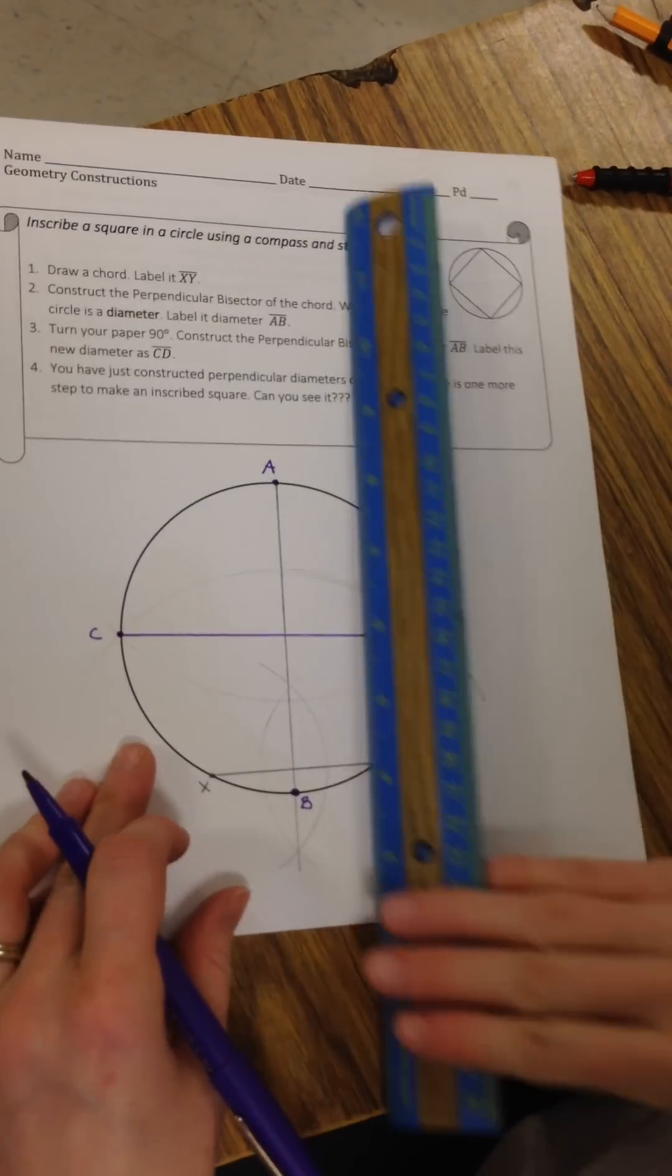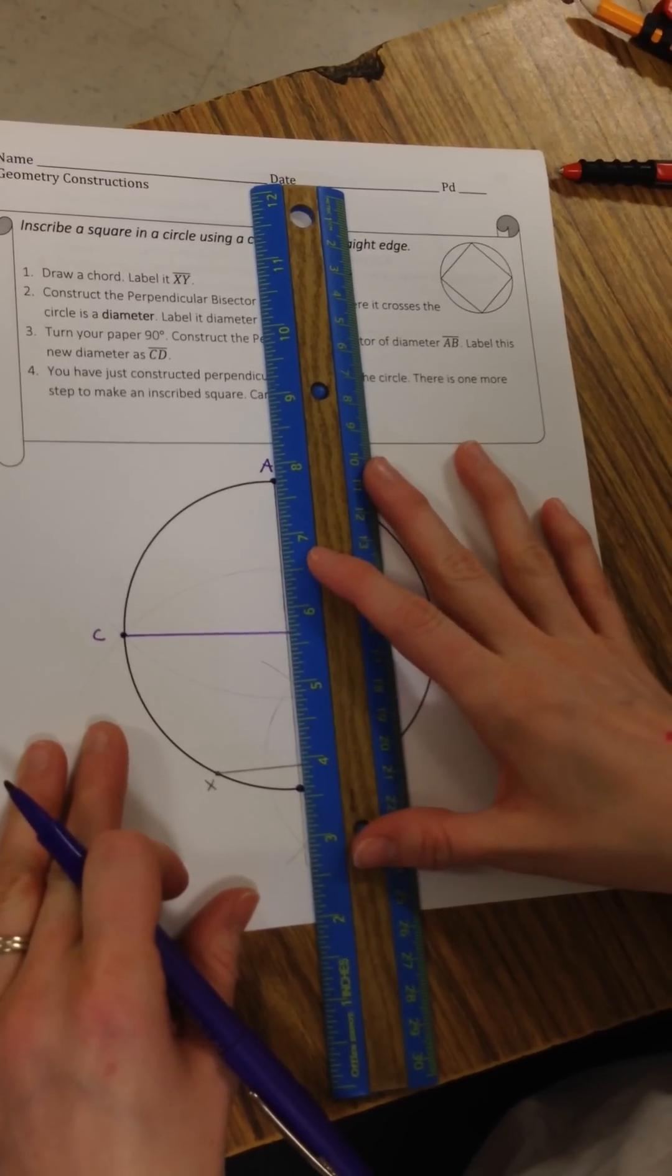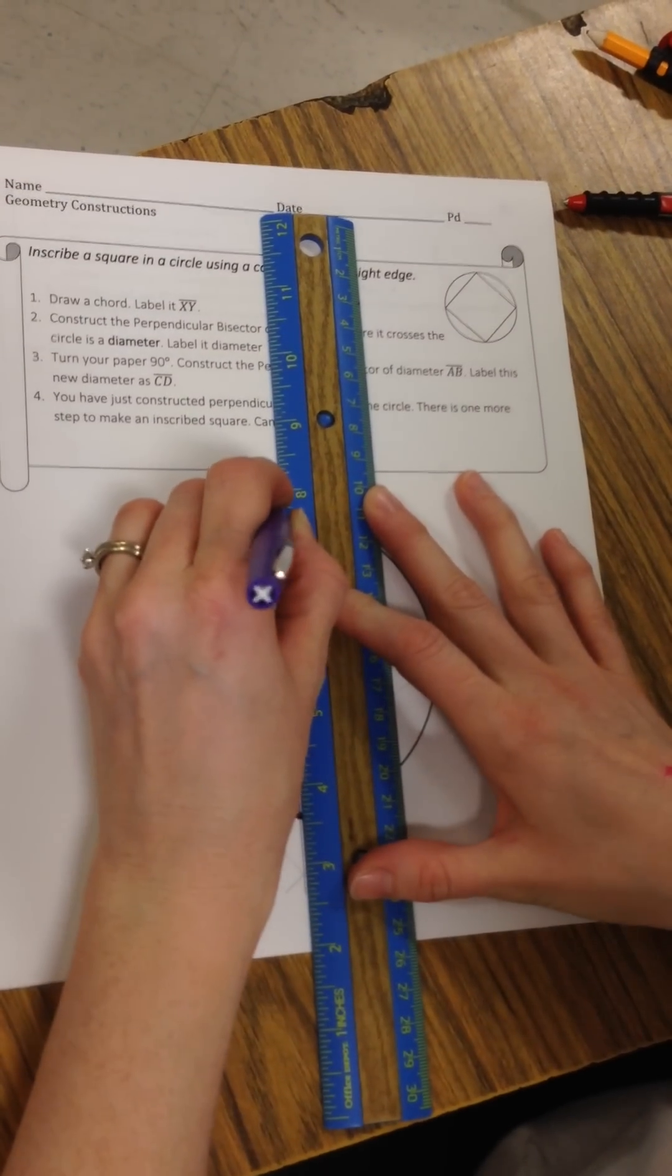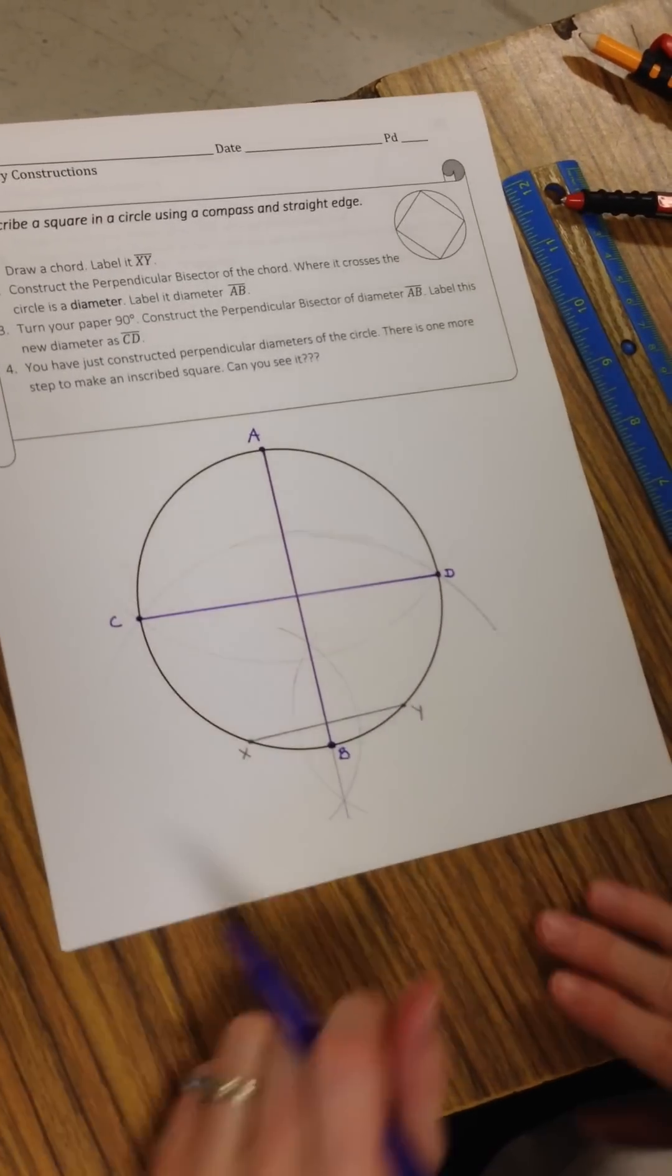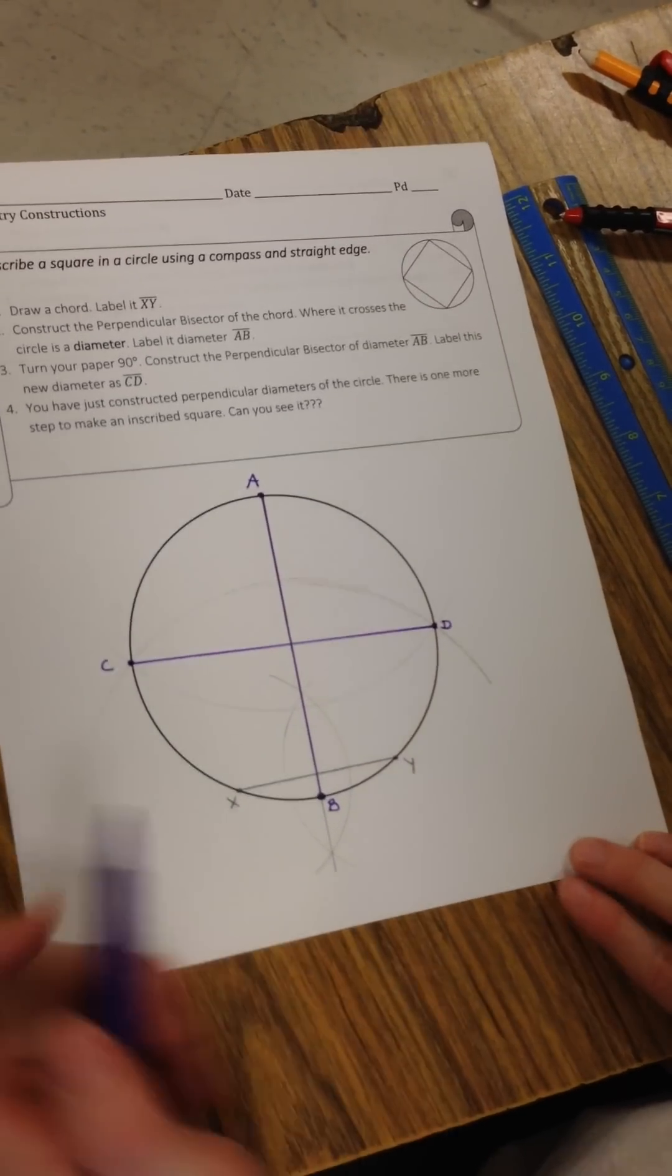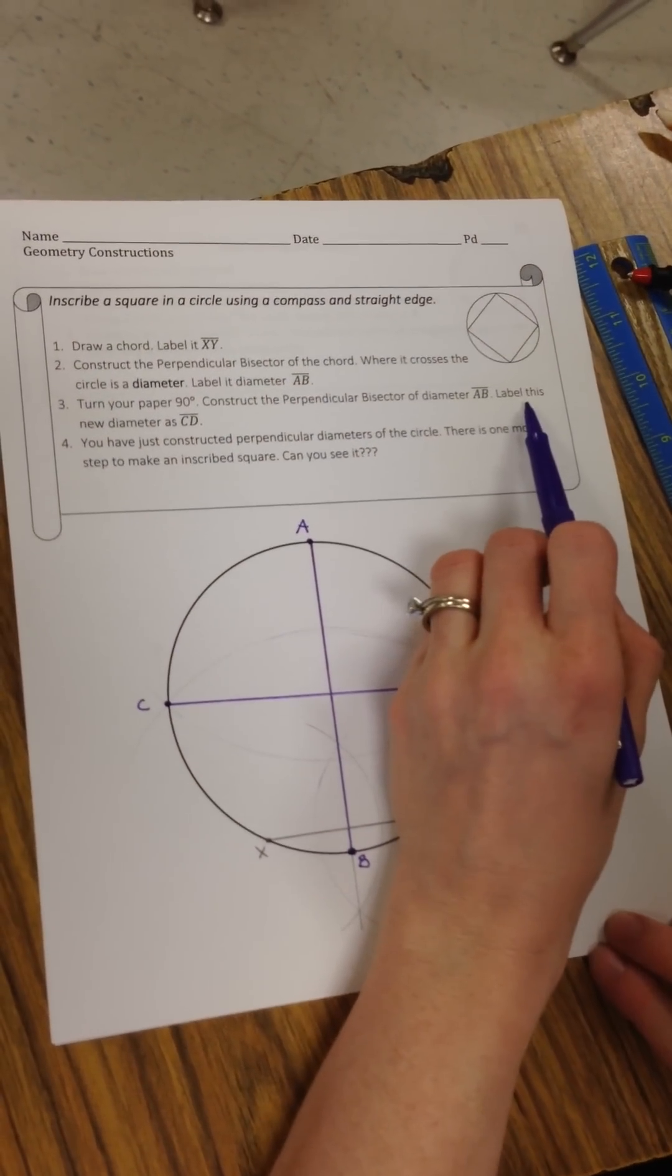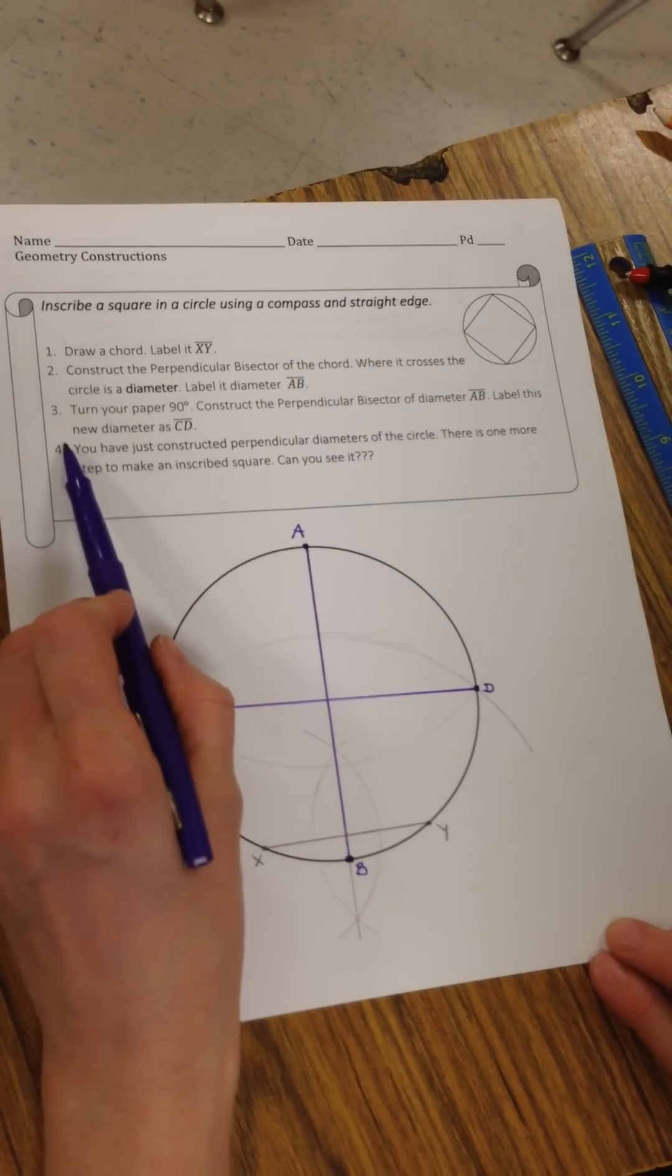I'm going to go ahead and make AB nice and dark also. You want to make sure that original chord XY is nice and light because that doesn't really help us with the square. So we turned our paper, we constructed the perpendicular bisector, and we're going to label the new diameter CD.